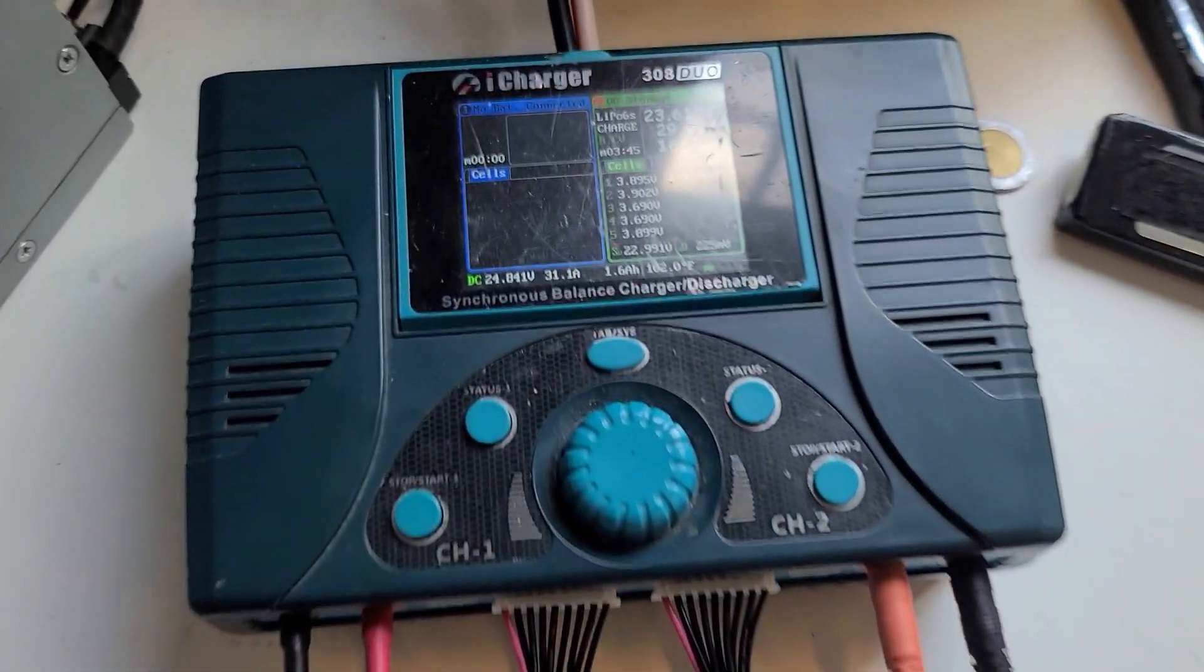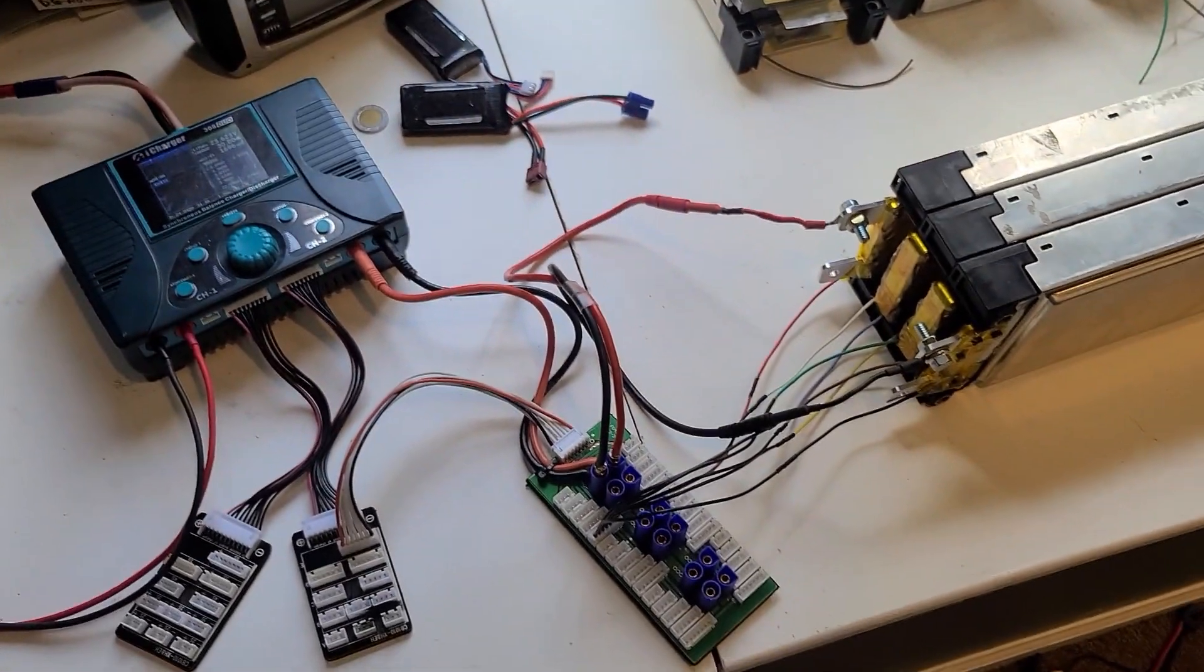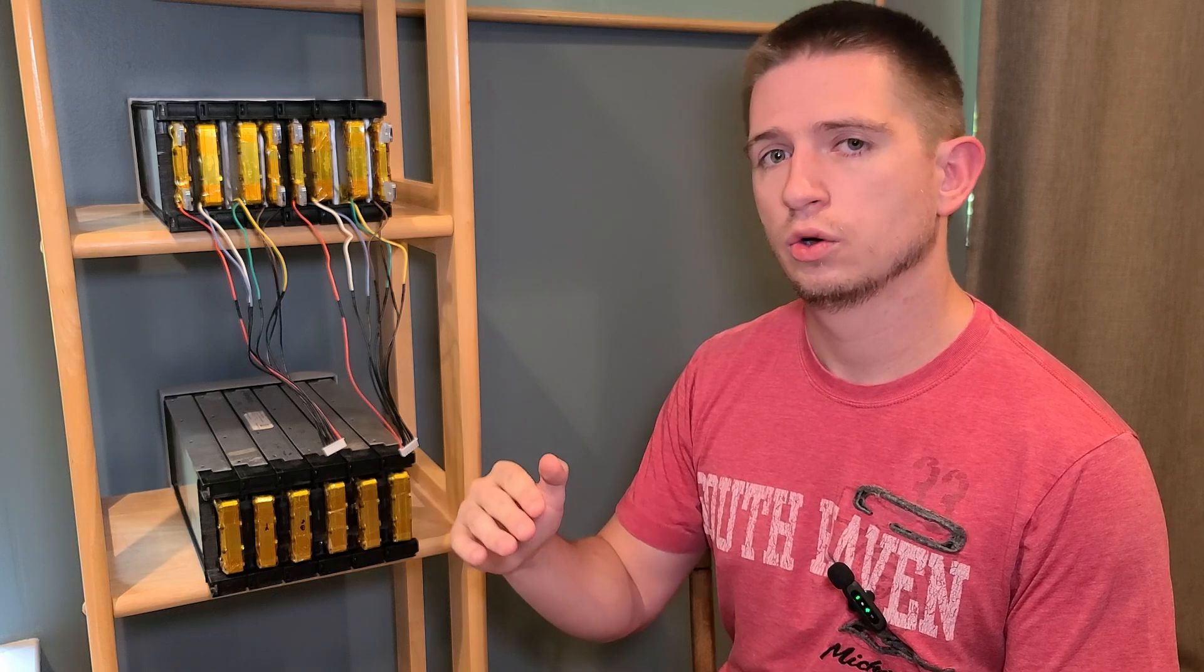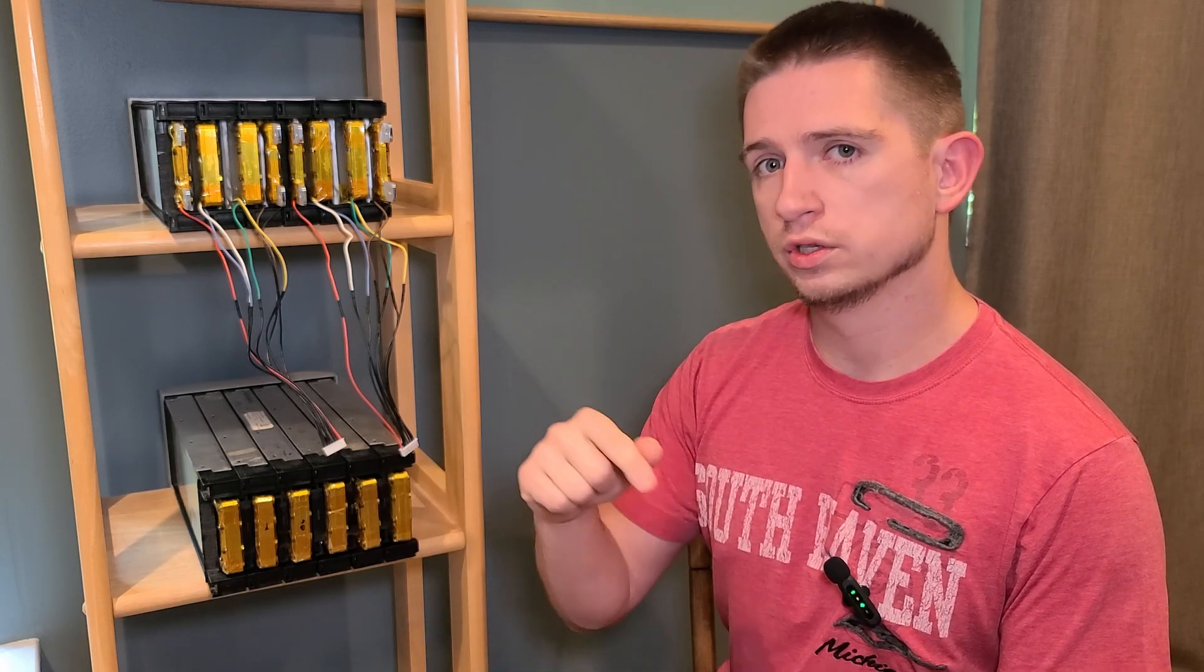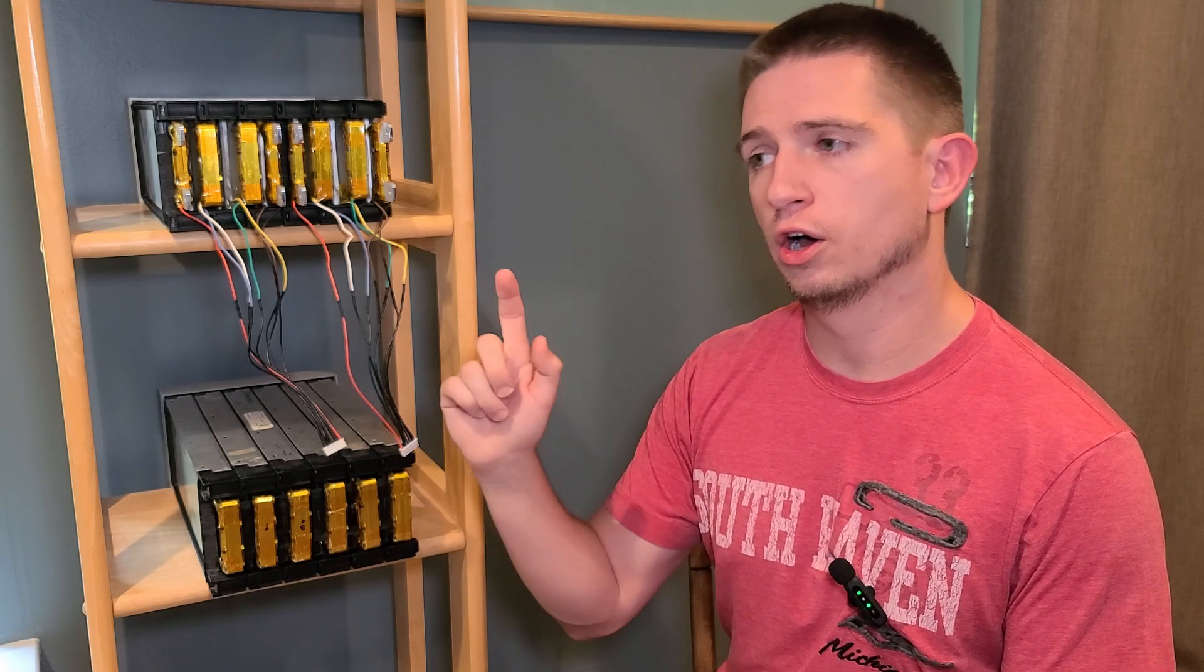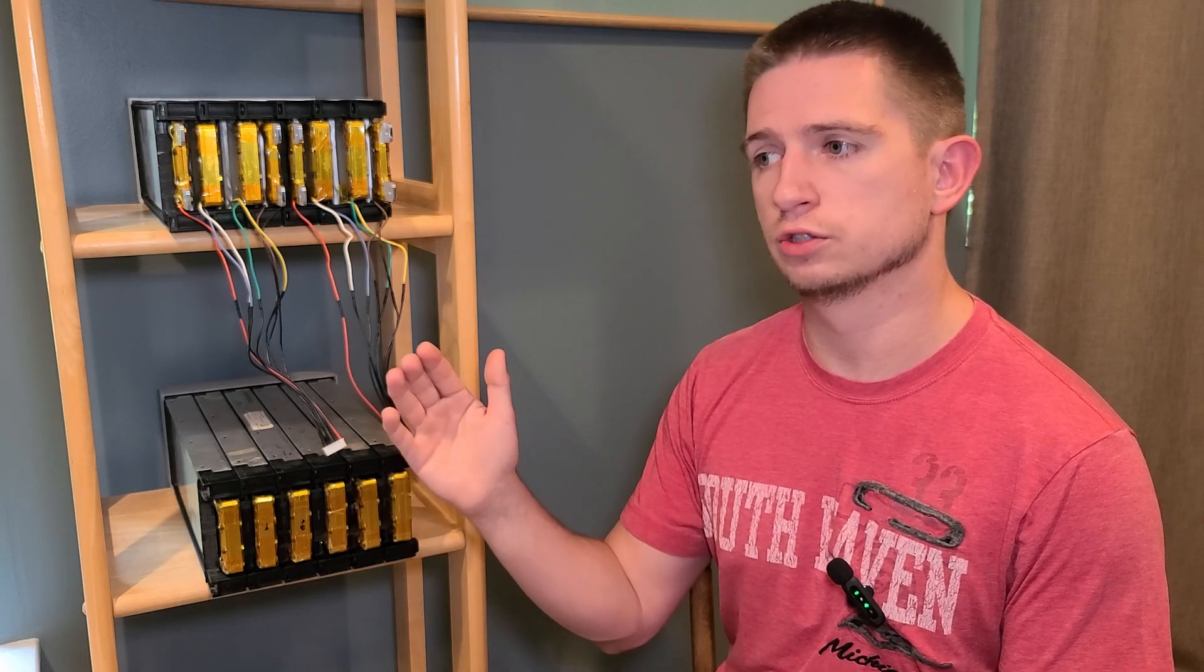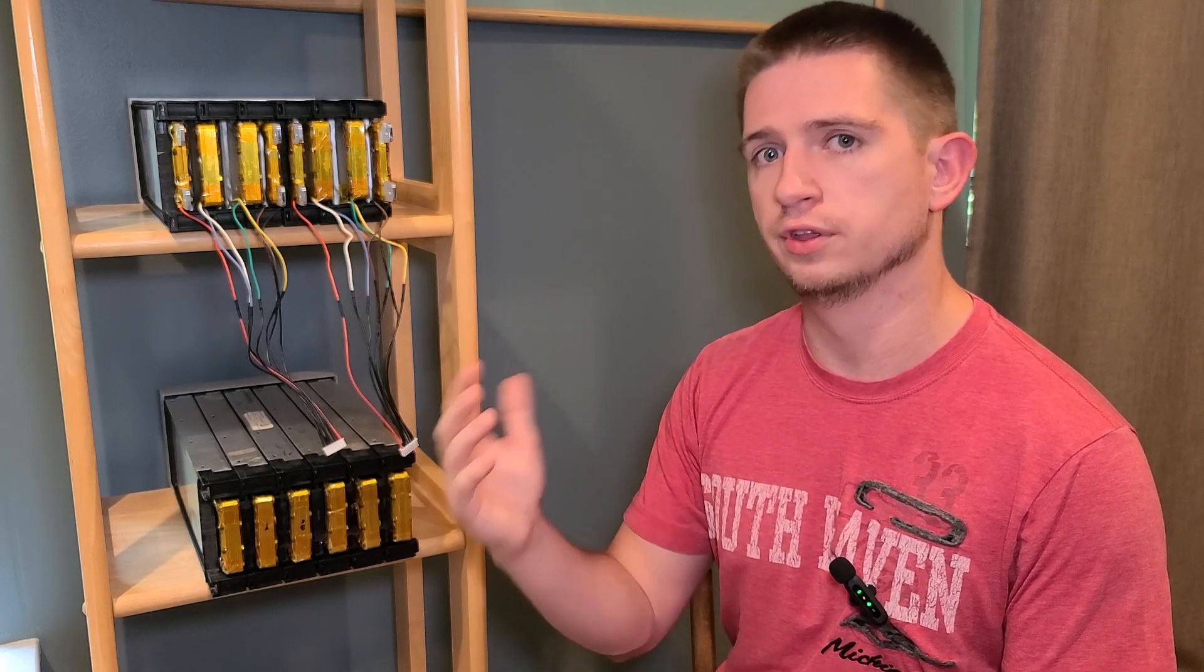So I had to make sure that all the cell voltages were completely even. And the best way to do that when I was doing it is I ended up charging the battery so that the lowest cell would be at least 3.7 volts or higher so that once it hit that mark, I would be able to hit balance on my iCharger.